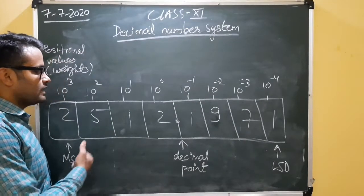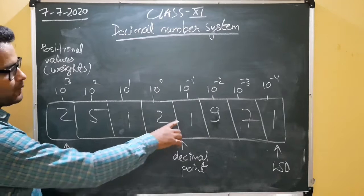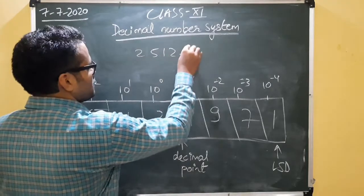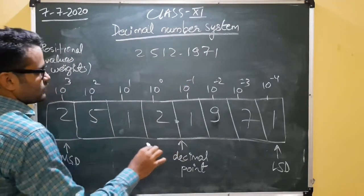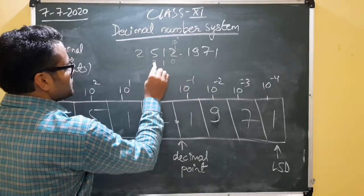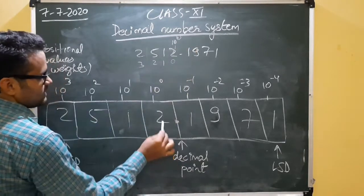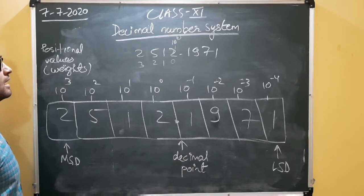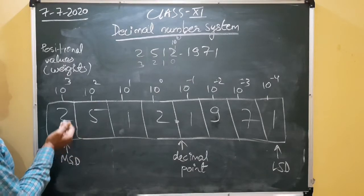Now we are going to see the positional values in decimal numbers. We are taking the number 2512.1971. The decimal point divides the integer and fractional parts. Starting from the right of the decimal point, we assign powers of 10: 10 to the power 0, 10 to the power 1, 10 to the power 2, and 10 to the power 3. So 2 is in the units place, 1 is in the tens place, 5 is in the hundreds place, and 2 is in the thousands place.